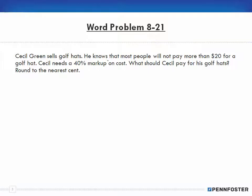Cecil Green sells golf hats. He knows that most people will not pay more than $20 for a golf hat. So not paying more than $20 would be like the selling price. Cecil needs a 40% markup on cost. So that's 40% markup on the cost, not the selling price. We don't know what the cost is, and the markup is 40% of the cost.